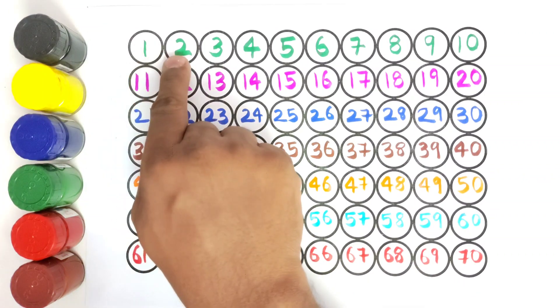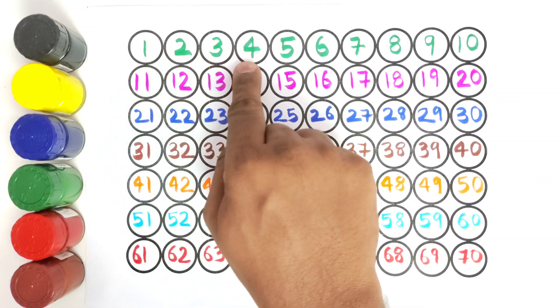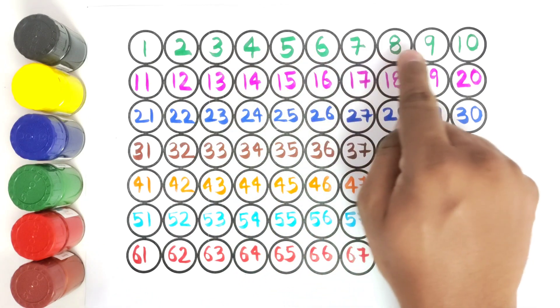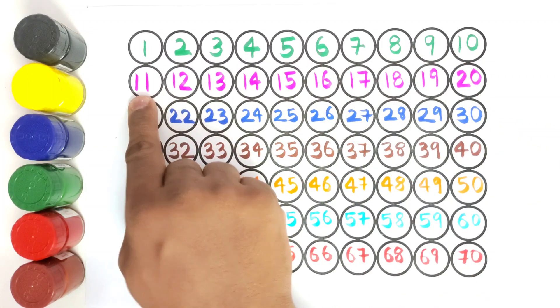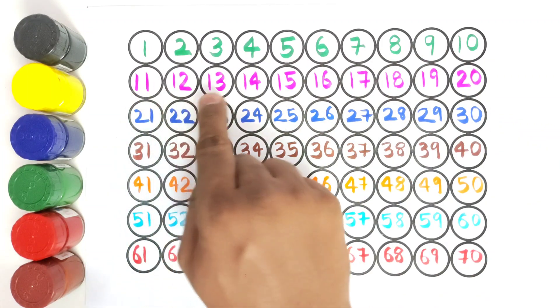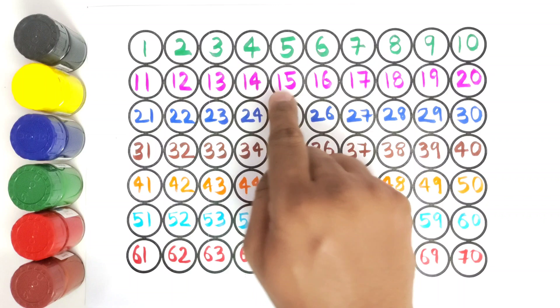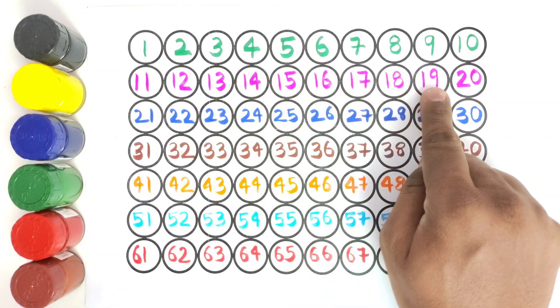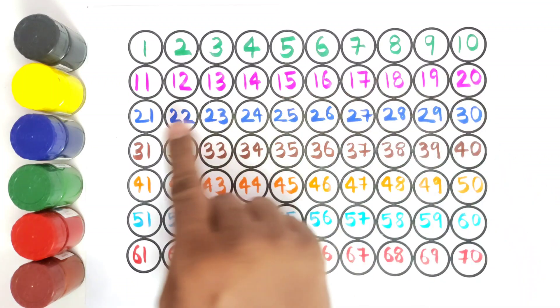1, 2, 3, 4, 5, 6, 7, 8, 9, 10, 11, 12, 13, 14, 15, 16, 17, 18, 19, 20.